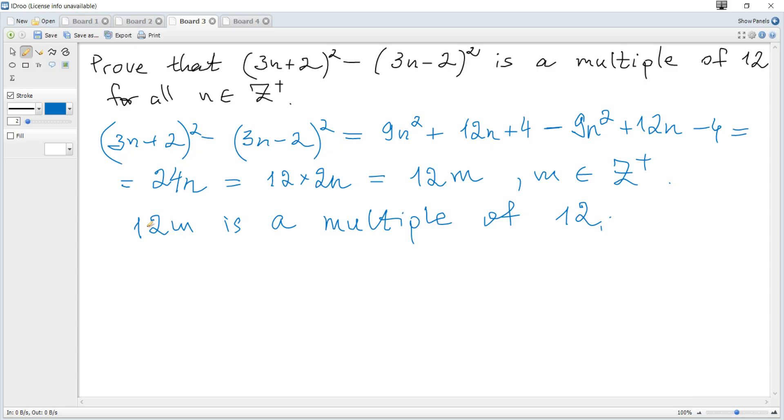When something is represented as 12 multiplied by an integer, it implies that it's a multiple of 12, meaning it is divisible by 12 without remainder. Hence, (3n+2)² - (3n-2)² is a multiple of 12 for all n is a positive integer, and that's all for the question.